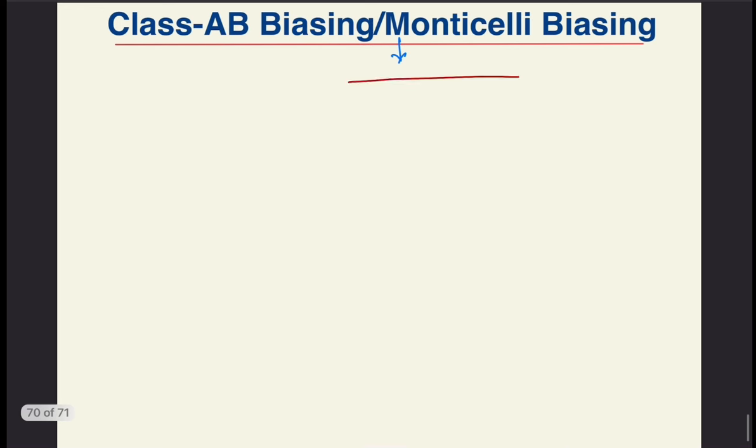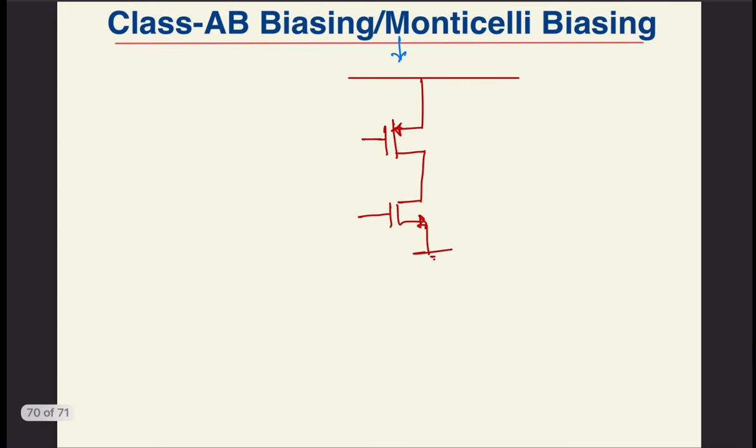Understanding these limitations, Monticelli came up with something more robust. Firstly, keeping in mind that the same kind of elements would track, he decided to establish the DC bias via similar kind of elements. So that would mean that we require another NMOS and PMOS. Since we want to establish an output bias voltage from these transistors, named MN2 and MP2, the intuitive way is to use them in a common drain configuration.